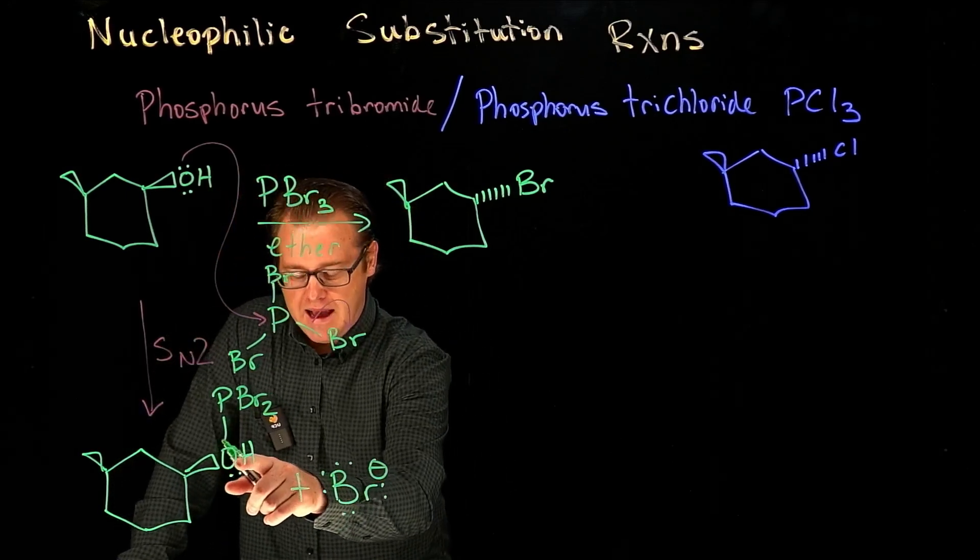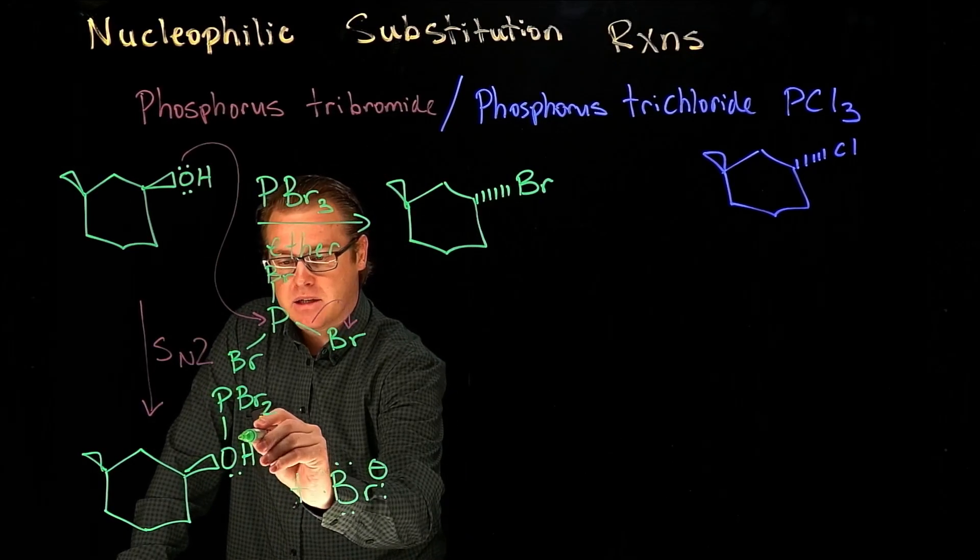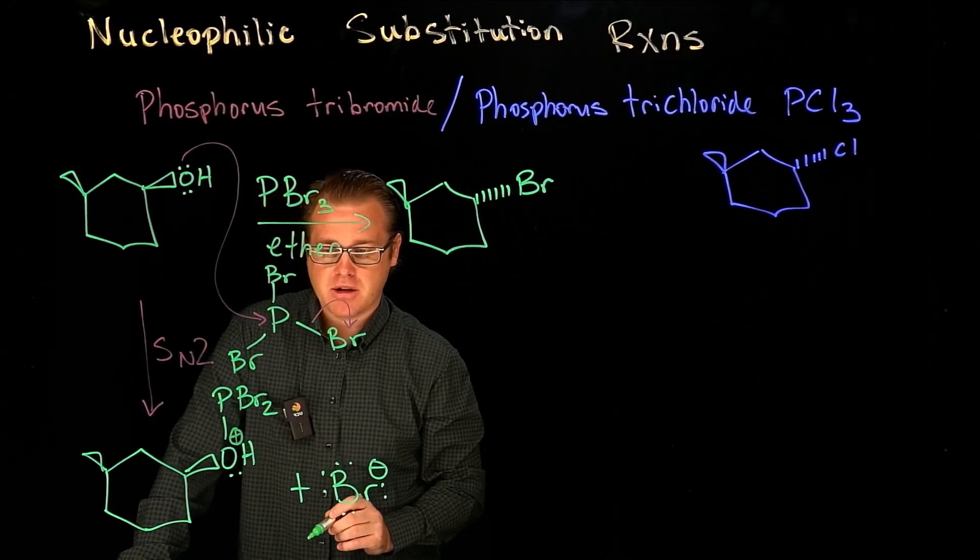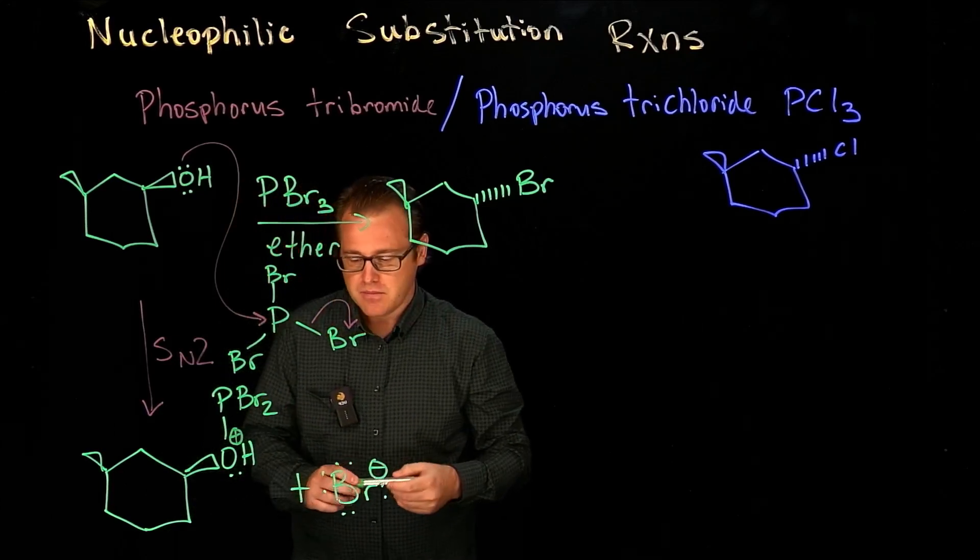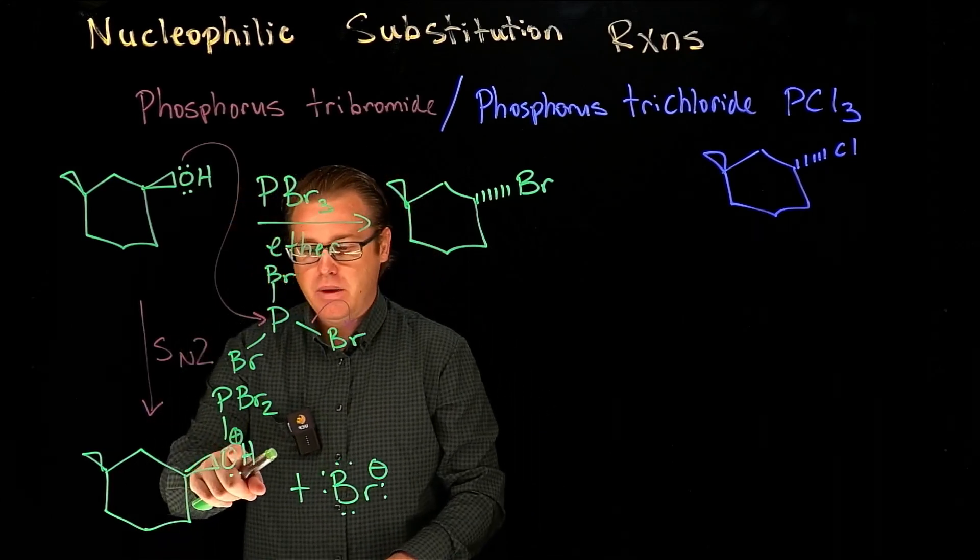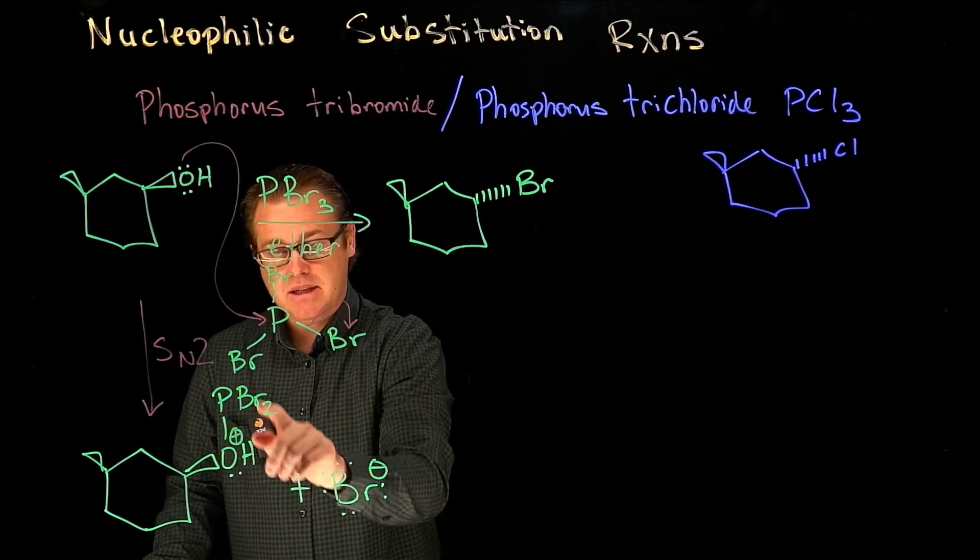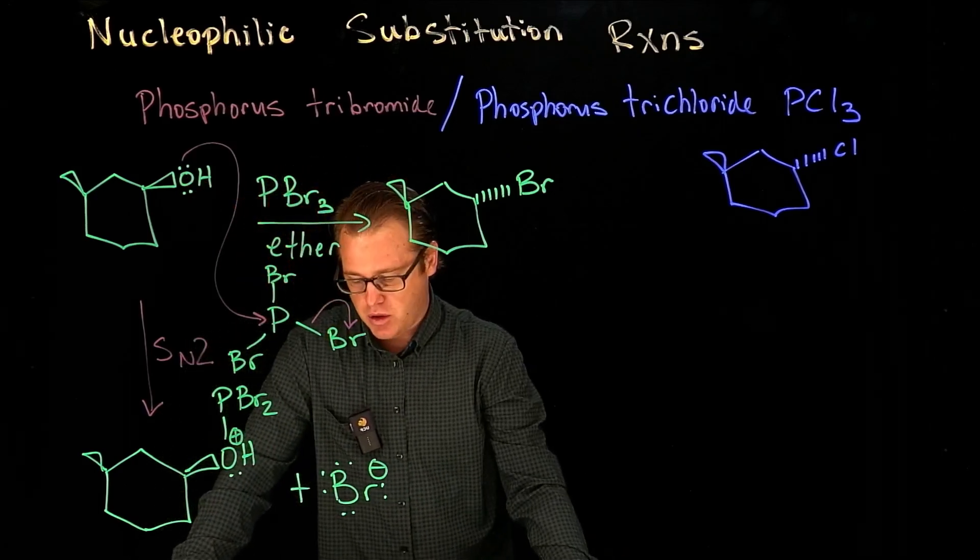We've kicked off one of the bromines as bromide. Now this oxygen atom has three bonds, so that has to be a positively charged alcohol. What we've done is converted this alcohol to this species, which is now a good leaving group.